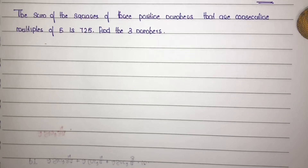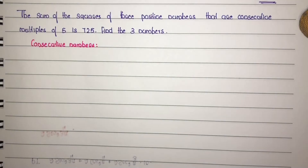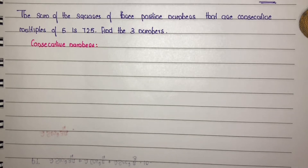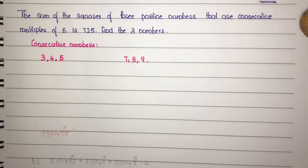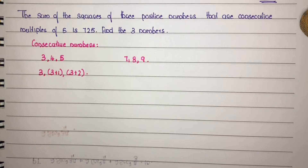What are consecutive numbers? 3, 4 and 5 are consecutive numbers. We can express them as 3, 3 plus 1, and 3 plus 2.